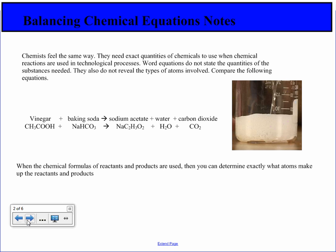Vinegar plus baking soda goes to sodium acetate plus water plus carbon dioxide. When the chemical formulas of reactants and products are used, you can determine exactly what atoms make up the reactants and products.